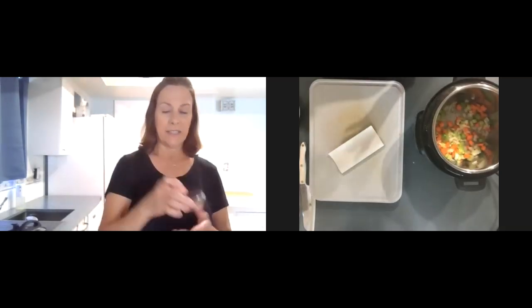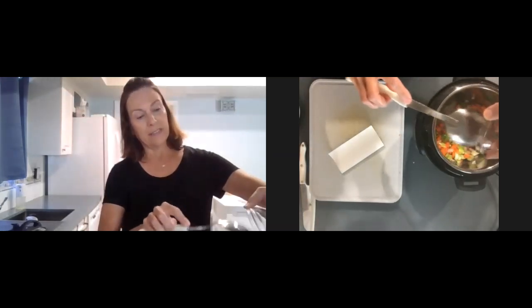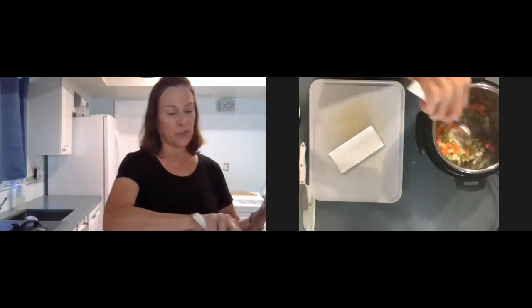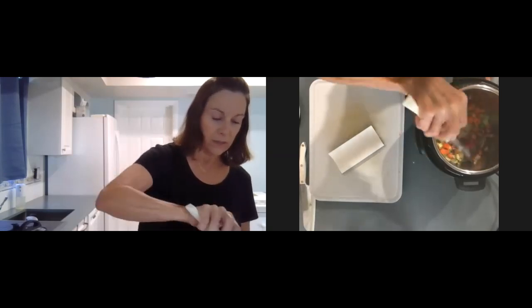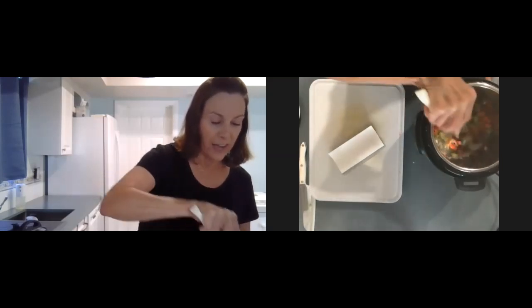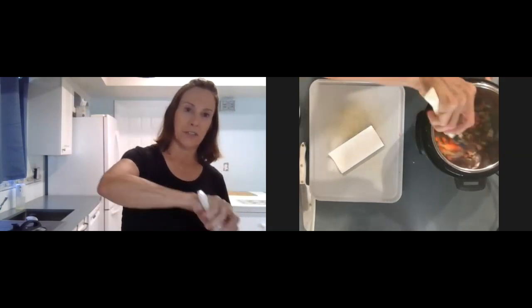So the first thing I'm going to add in is the tomato paste, as you can see. Because you want to get that. It just gets more flavorful if you saute it with vegetables. You don't have to if you dump it in with your sauce. It's fine. But this way just gives it a little more flavor.